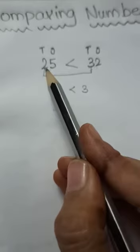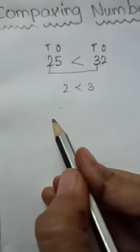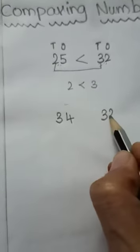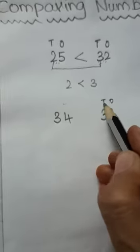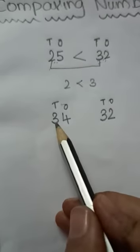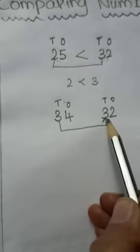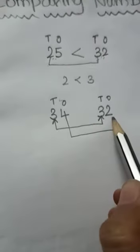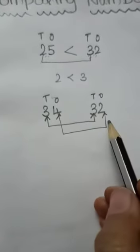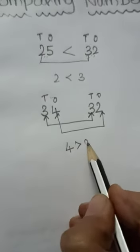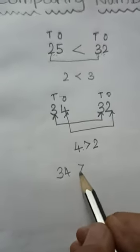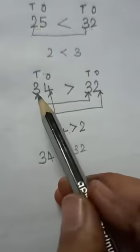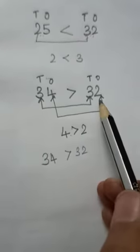If we have the same numbers on the 10's place, what do we have to do? Let's learn it here. Suppose we have the numbers 34 and 32. You can see, in both the 10's places we have 3. So we have to compare the numbers on the 1's place. Here 4 is greater than 2. That means 34 is greater than 32. Remember, the open mouth should always be towards the bigger number. So 34 is greater than 32.